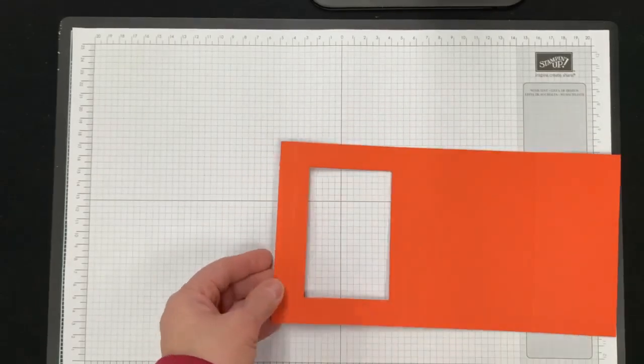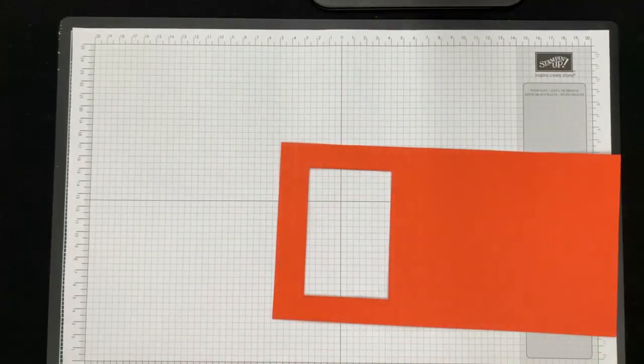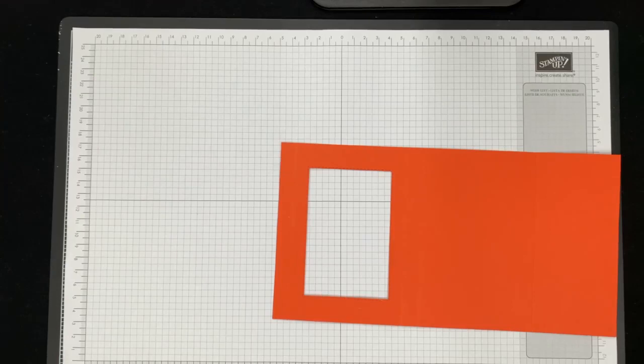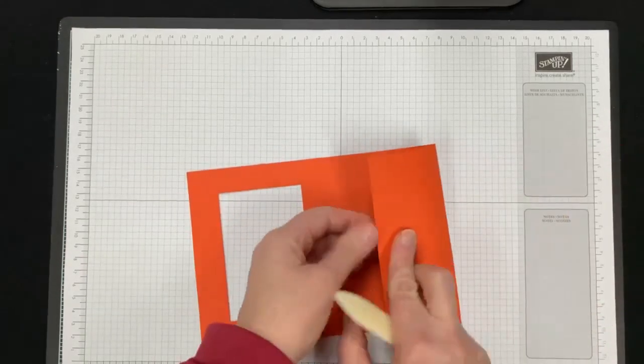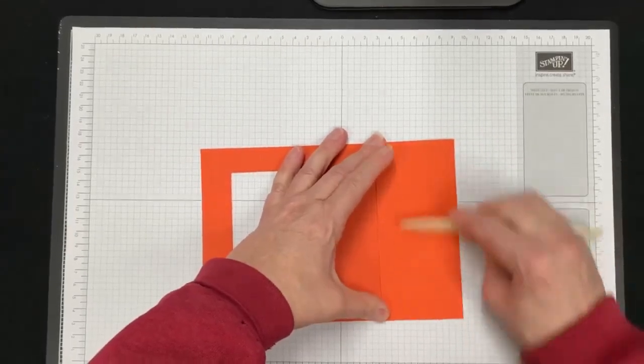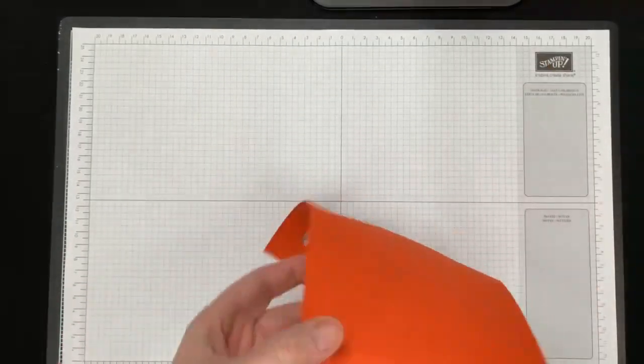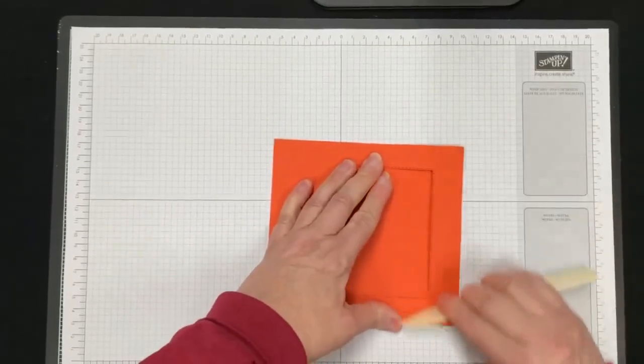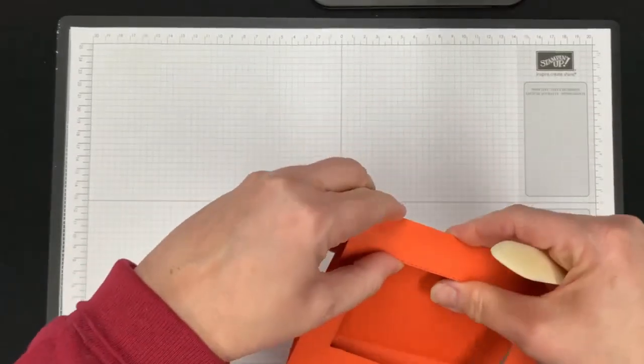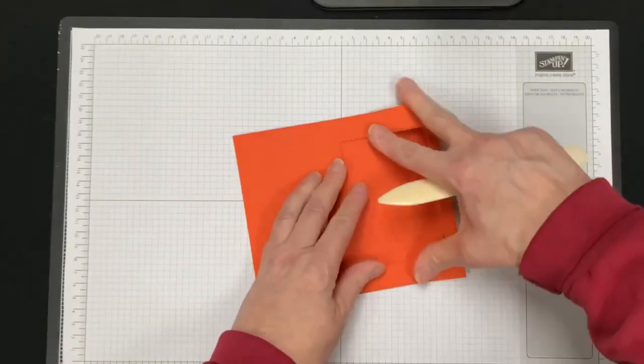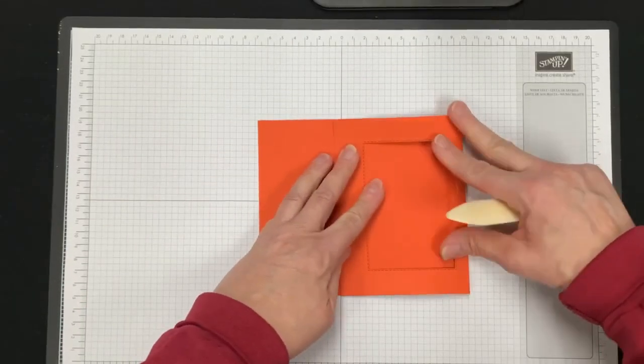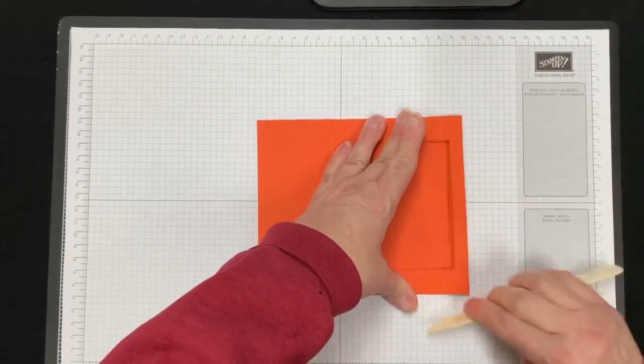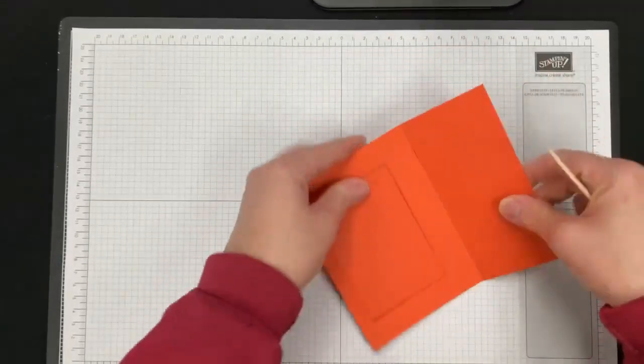I'm going to go ahead and fold this all up. I do have to get my bone folder - sorry about that, you know you think you have everything and then I forgot my bone folder. So we're going to crease all of these really well, your folds, your score lines, to make our little shadow box.